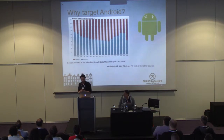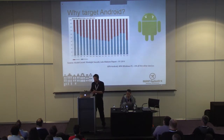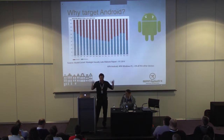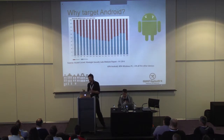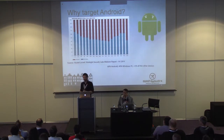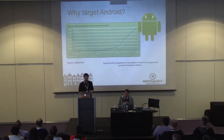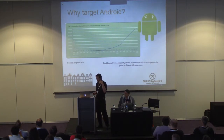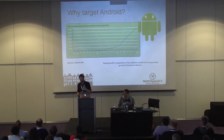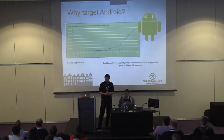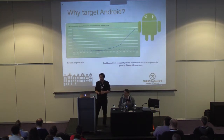If you take all malware and throw it into one bucket, then split it up: how much is Android malware, how much is Windows, and what's in the other bucket? Alcatel-Lucent figured out that right now 60% of malware is Android malware, and only 40% is Windows — so Android has really taken over. Less than 1% is all other devices.